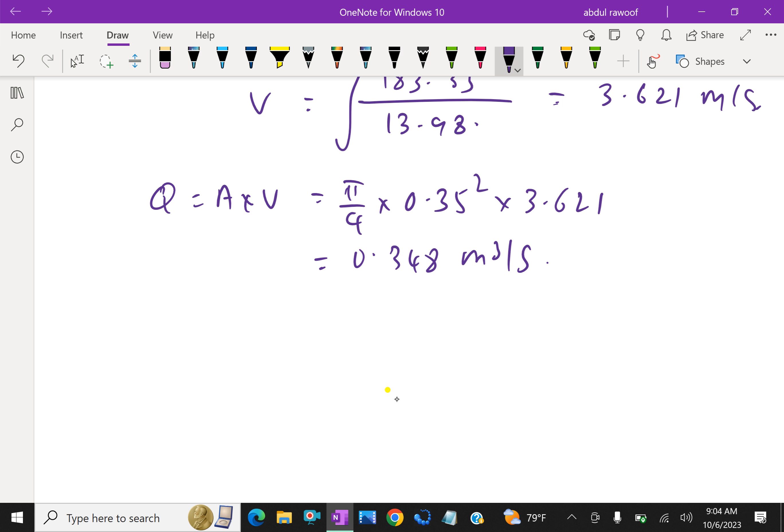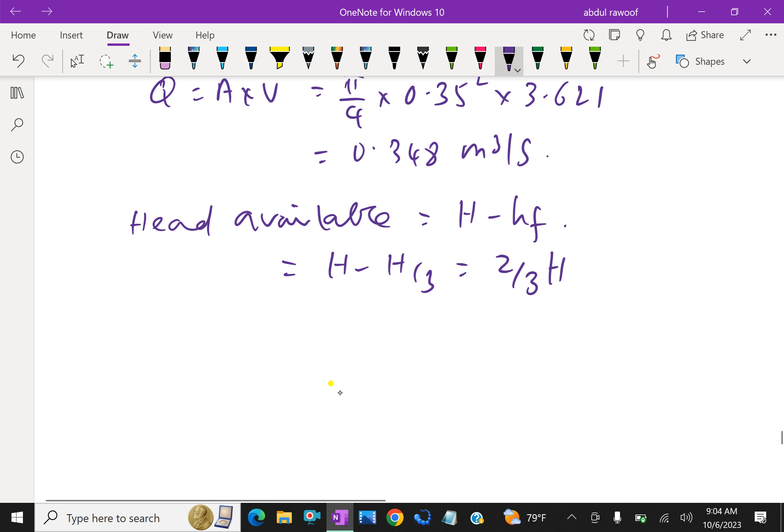The head available is H minus hf. For maximum power, H minus hf equals H minus H by 3, which is 2 by 3 H. Then 2 by 3 times 550 meter equals 366.7 meter.